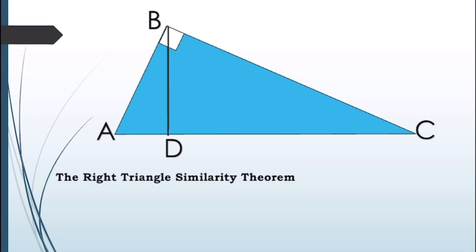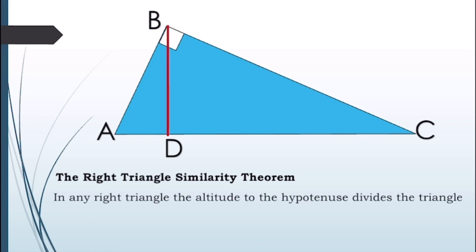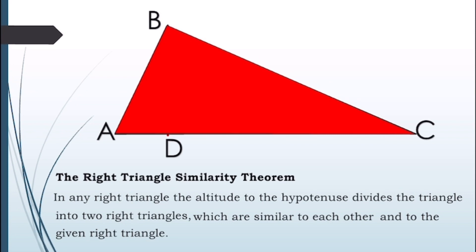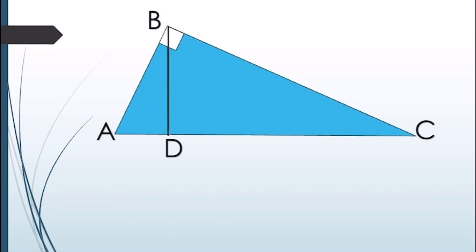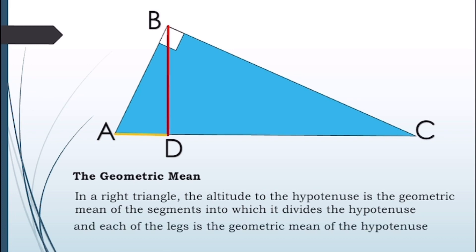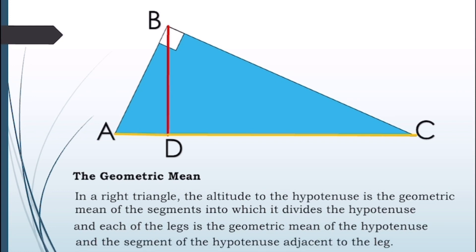The right triangle similarity theorem states that in any right triangle, the altitude to the hypotenuse divides the triangle into two right triangles which are similar to each other and to the given right triangle. The geometric mean states that the altitude to the hypotenuse is the geometric mean of the segments into which it divides the hypotenuse, and each of the legs is the geometric mean of the hypotenuse and the segment of the hypotenuse adjacent to that leg.